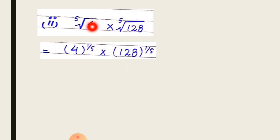It is actually the radical of order 5, that's why I write here 4 on the whole power 1 by 5, and similarly 128 on the whole power 1 by 5. According to the product law, the bases are different but the exponent is the same. So now we have to write the exponent one time and multiply the bases.